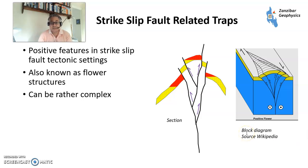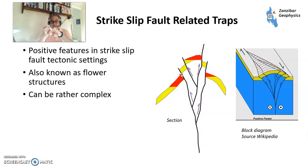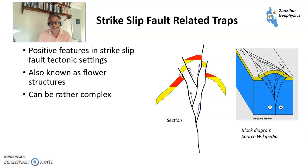We also have strike-slip related faults, which tend to be very complicated. Here you've got tectonic plates moving side by side. With a bit of compression — called transpression — you get things called flower structures, which can be quite complicated. Imaging them on seismic can also be a challenge.